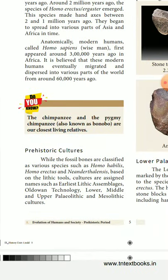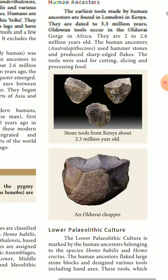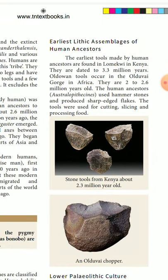Then, prehistoric cultures. While fossil bones are classified as various species such as Homo heidelbergensis, Homo erectus, and Neanderthals, based on lithic tools, cultures are assigned names: earliest lithic assemblages, Oldowan technology, and lower, middle, and upper Paleolithic and Mesolithic cultures. The earliest lithic assemblages of human ancestors have been found.